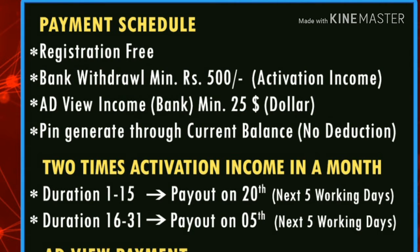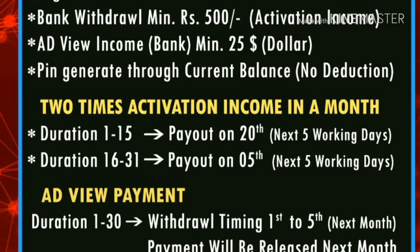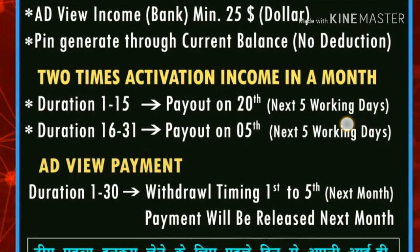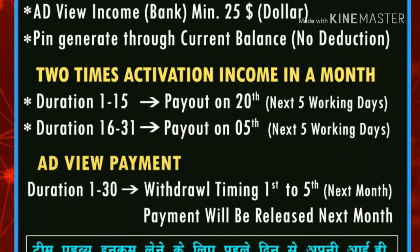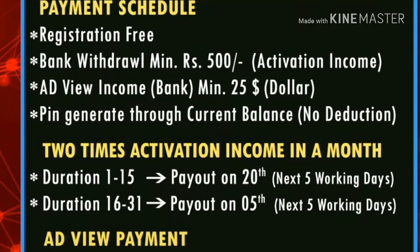The activation income is given two times in a month. Payment requests can be given from the 1st to the 15th and the 15th to the 20th. In 15 days you will get to the next stage, and in the next month you will get the payout within 5 days, including bank withdrawals.